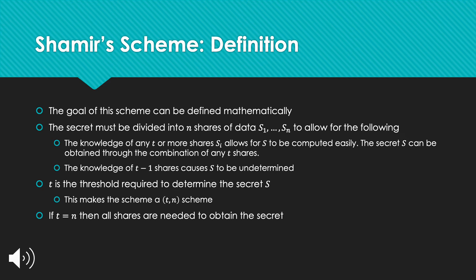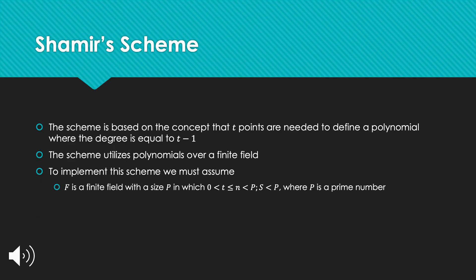If T is equal to N, then all shares are needed to reconstruct the secret. Shamir's scheme is based on the concept that T points are needed to define a polynomial where the degree is equal to T-minus-1. The scheme utilizes polynomials over a finite field. To implement this scheme, we assume that F is a finite field with a size of P, where 0 < T ≤ N < P, and S is also less than P, where P is a prime number.